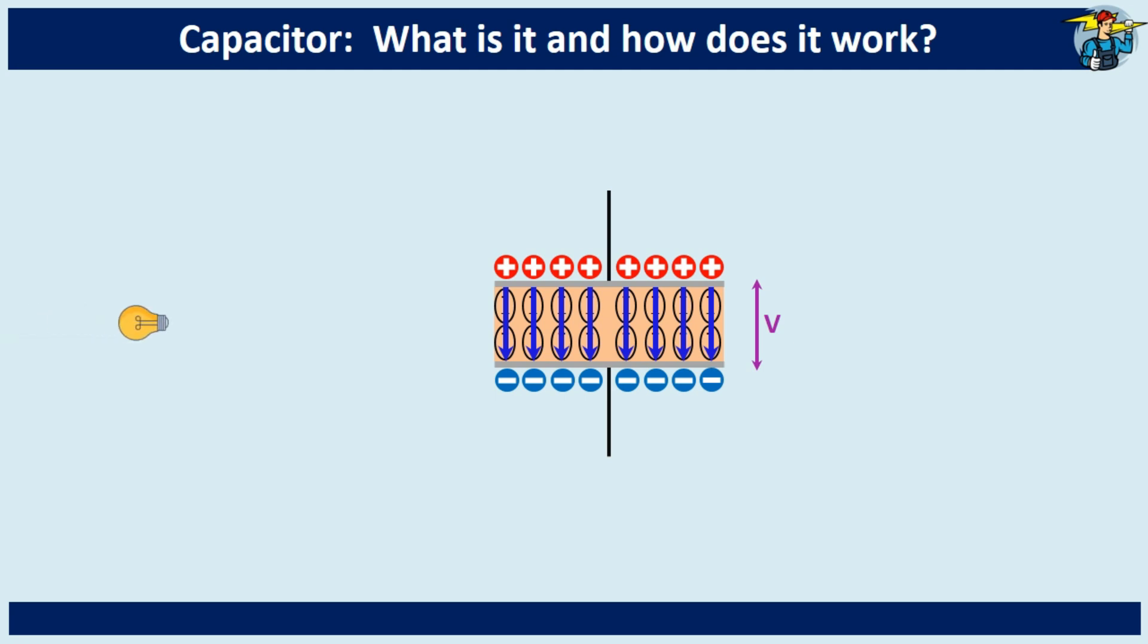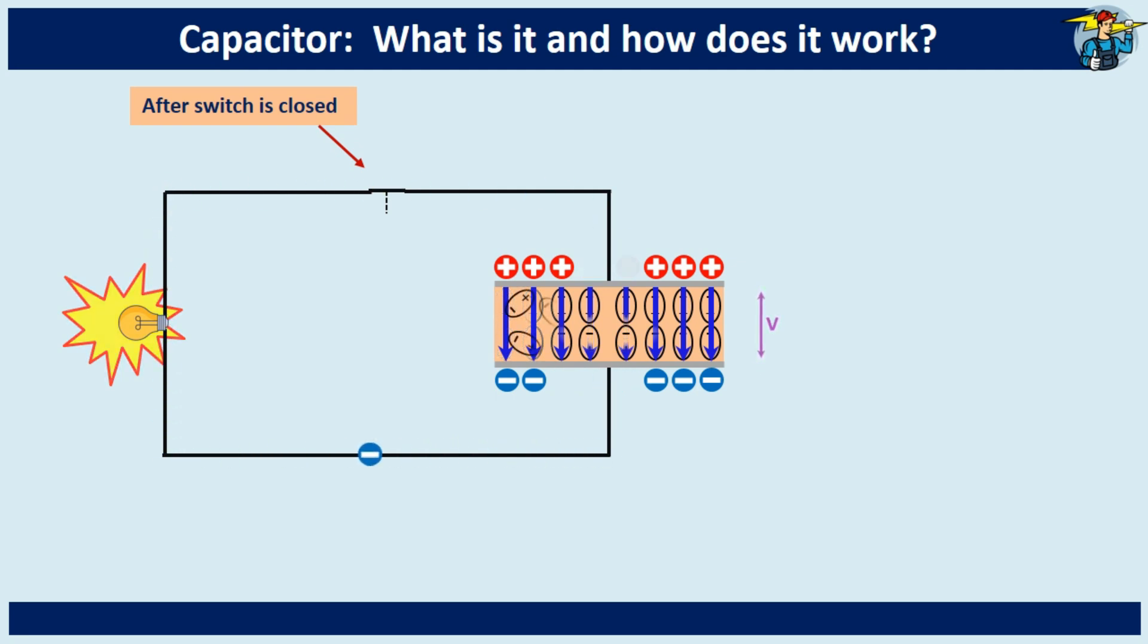Let's connect an electrical bulb to the charged capacitor now. When the light bulb is connected, electrons begin to flow from the negative end of the capacitor to the positive end and neutralize the positive charges it contains.